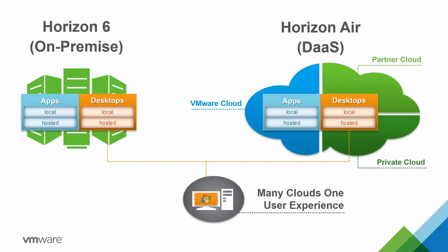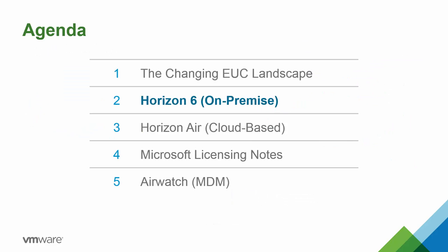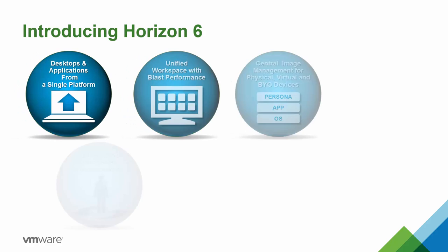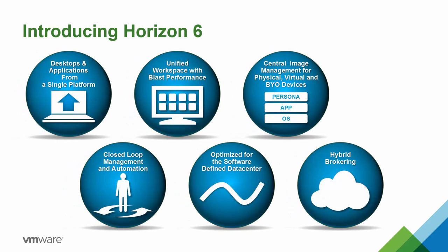VMware provides virtual desktop and application capabilities in two core offerings: Horizon 6, our on-premise solution, and Horizon Air, our cloud-based desktop-as-a-service solution. The Horizon 6 bundle provides virtual desktops and the agility to deliver applications from a single platform. It gives you a single portal via the Workspace portal, with great performance using either the Horizon View client or a standard HTML5 web browser to access desktops and applications from any device.